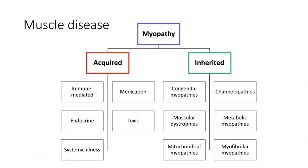Just as a way of background, it's important to remember that muscle diseases in general, or myopathies, can be best divided into those that we consider acquired and those that are inherited, or maybe even better terminology would be genetic, since there isn't always an inheritance pattern. We're obviously not going to talk about the genetic ones today. Those would be, for example, muscular dystrophies. Under the acquired category, probably the biggest category that we think about are the immune-mediated ones, and those are the ones we're going to be talking about today.